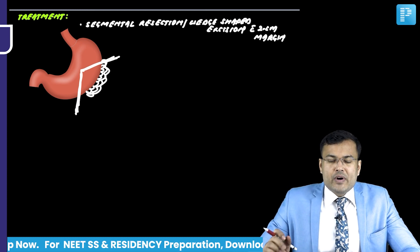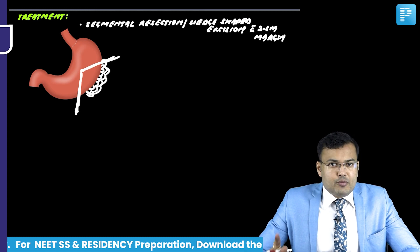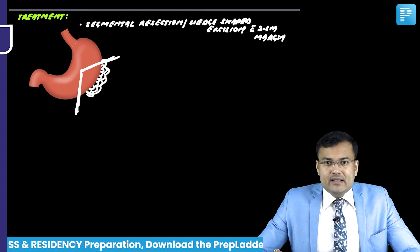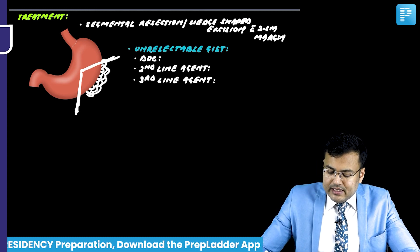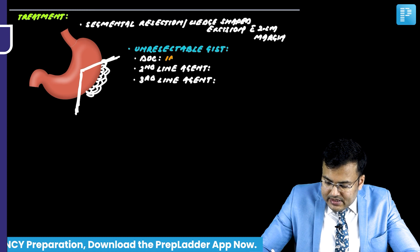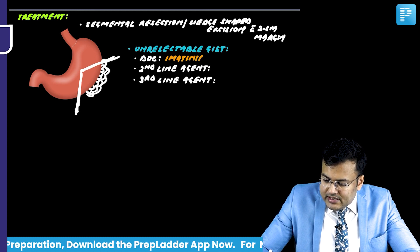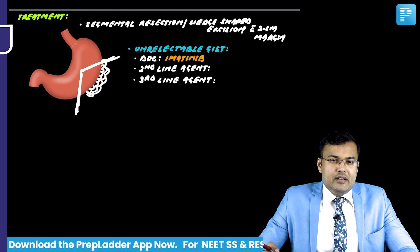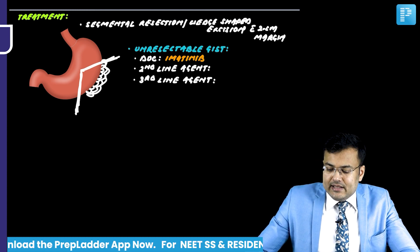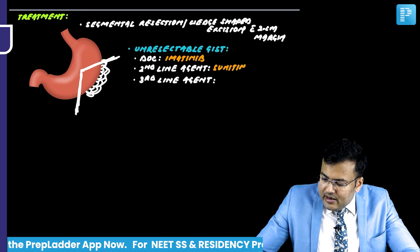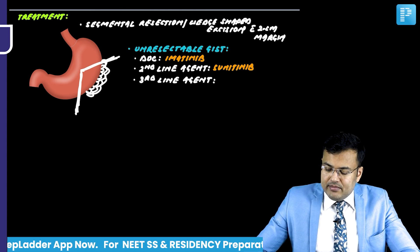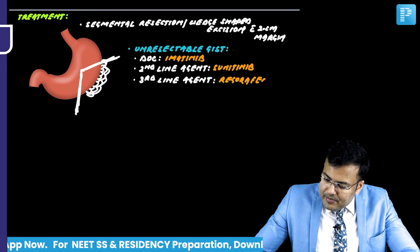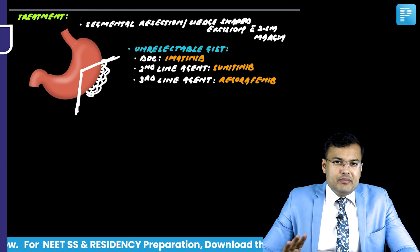For unresectable GIST, we downstage the tumor with imatinib mesylate as the first-line agent. For imatinib-resistant GIST, the second-line agent is sunitinib, and the third-line agent is regorafenib. Imatinib is also used in CML and as first-line agent in DFSP (dermatofibrosarcoma protuberans).